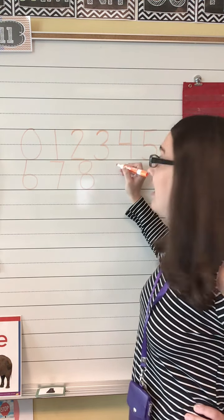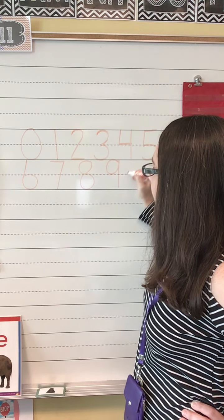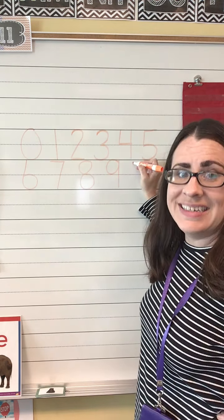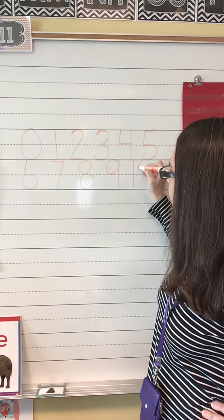Eight. What's next? Nine. And what's the last one? Ten. Which is a one and then a zero.